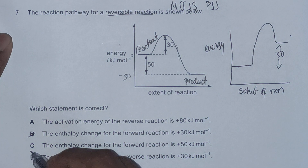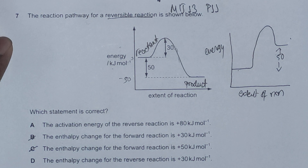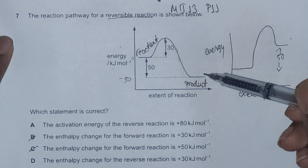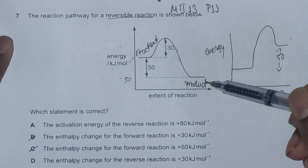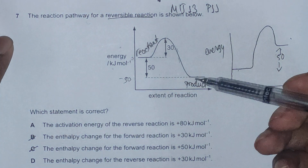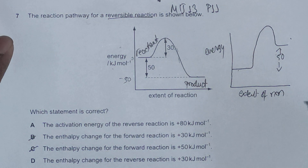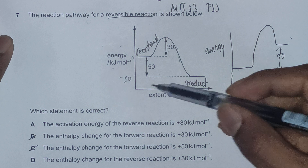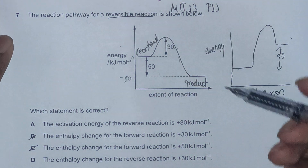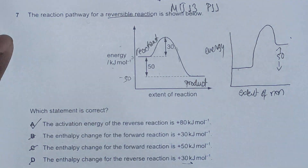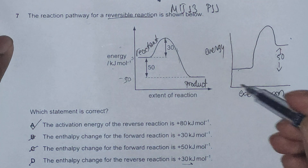Now looking at the reverse reaction: the enthalpy change is positive 50, because negative 50 for the forward reaction means the reverse reaction enthalpy change should be positive 50 — we go from negative 50 back to zero. The option states 30, so we disqualify this as well. This makes option A the correct answer.